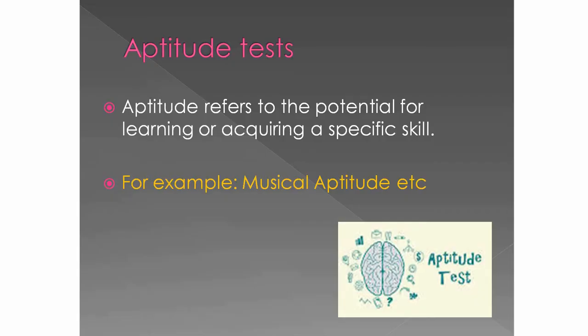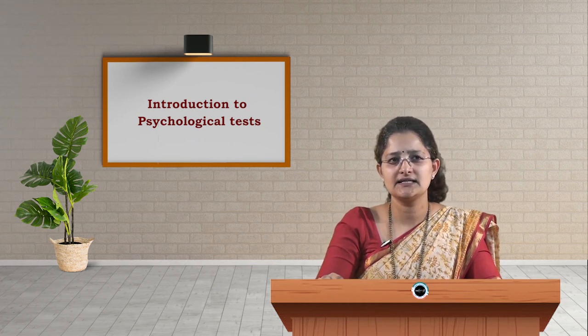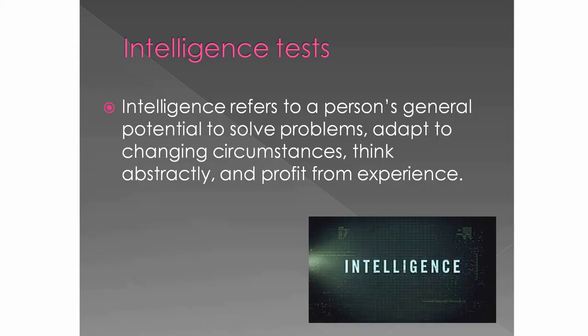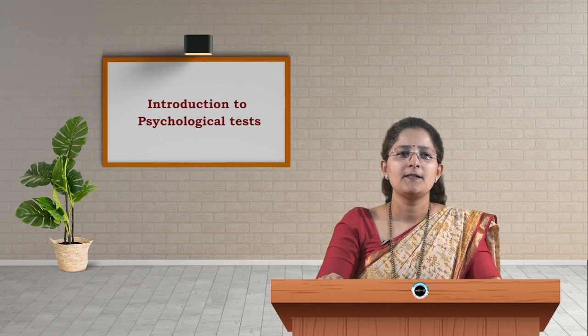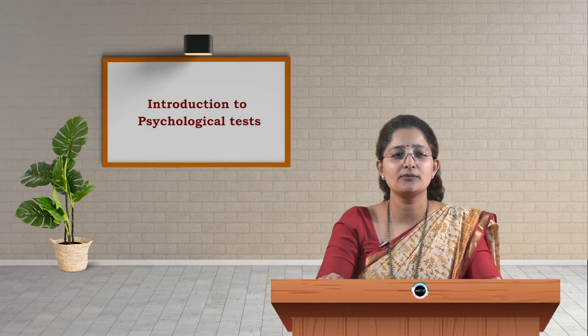Aptitude tests measure potential for learning or acquiring a specific skill — for example, a musical aptitude test. Intelligence tests measure a person's general potential to solve problems, adapt to changing circumstances, think abstractly, and profit from experience. Examples include the Seguin Formboard Test and the Coloured Progressive Matrices.